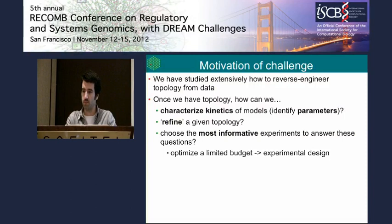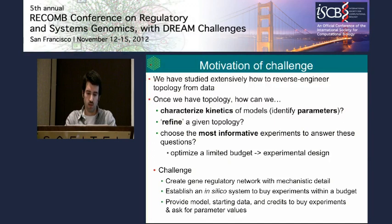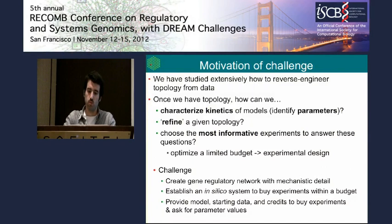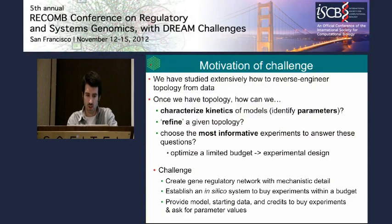To address these questions, we set up a challenge based on building a gene regulatory network with mechanistic detail — I will spend quite some time explaining how that was done. We established an in silico system to perform experiments, and participants could buy experiments. We gave people a model, some starting data to work with, as well as credits to buy new experiments. In the first challenge we asked them to find the parameters, and in the second to refine a given topology.